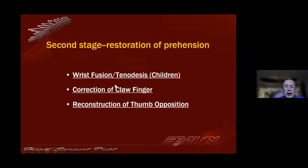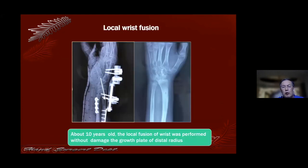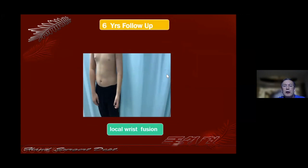If all reconstructed functions achieve at least M3 or above, we then do secondary static stabilization operations, such as wrist stability procedures and opposition reconstruction. For children, we usually use tenodesis of the ECRB and the FCU for opposition reconstruction. If the child is over 10 years old, we also use local wrist fusion. For the distal radial epiphysis, we use an external fixation approach.